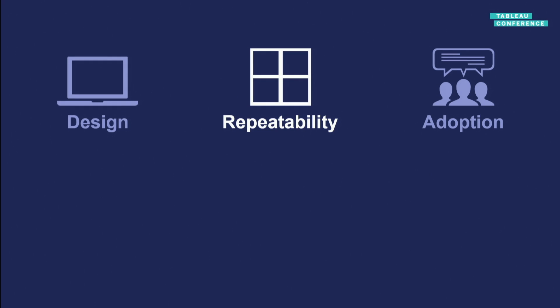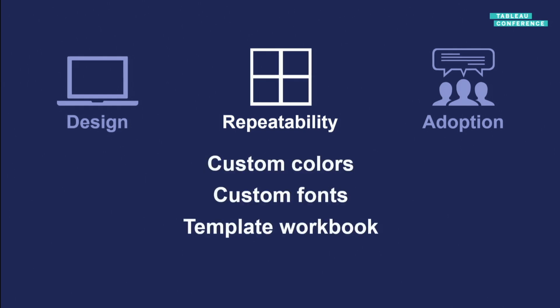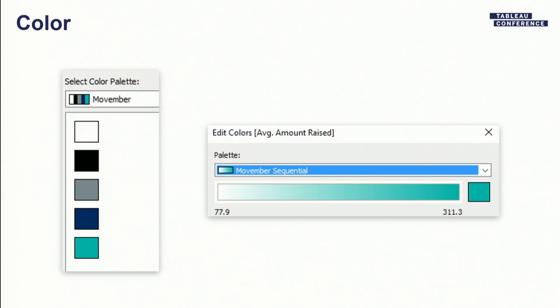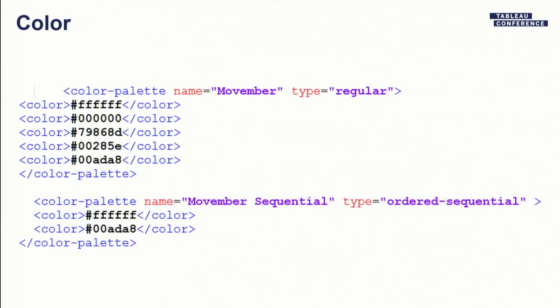We've made a beautiful dashboard with our branded look and feel. How do we make sure everyone in our organization can use this? There are three things to talk about, two of which we've already seen. First, our use of custom colors. To do that, you create color palettes using the hex code of a color - there are many free tools online to determine individual color codes. Then you add them to a file in your Tableau repository called Preferences, and that same color palette can be used across all of your workbooks without having to remember it each time.